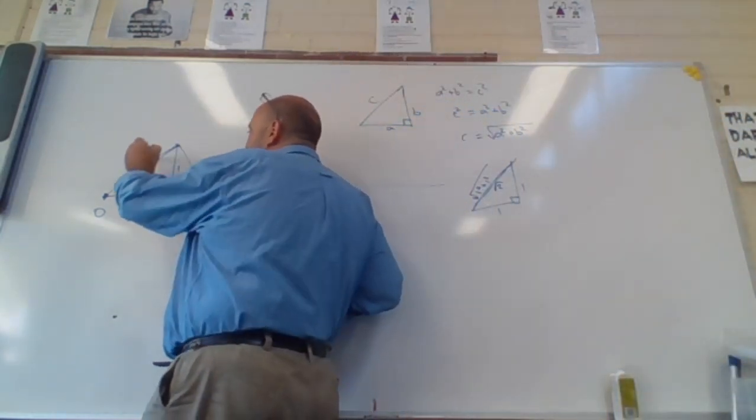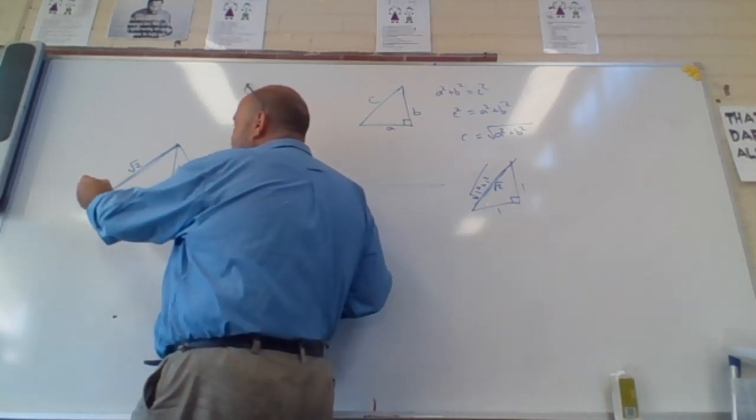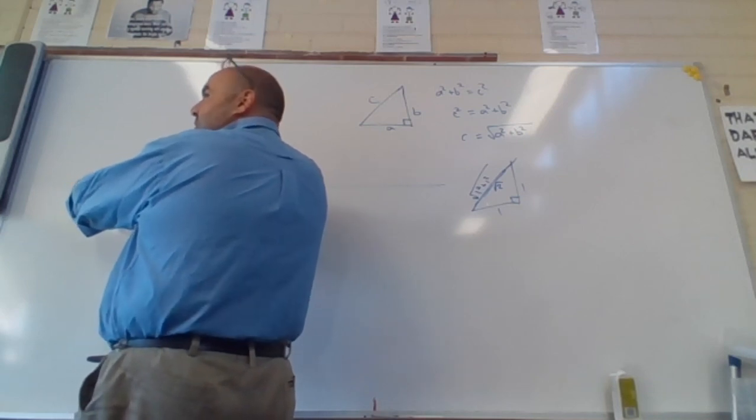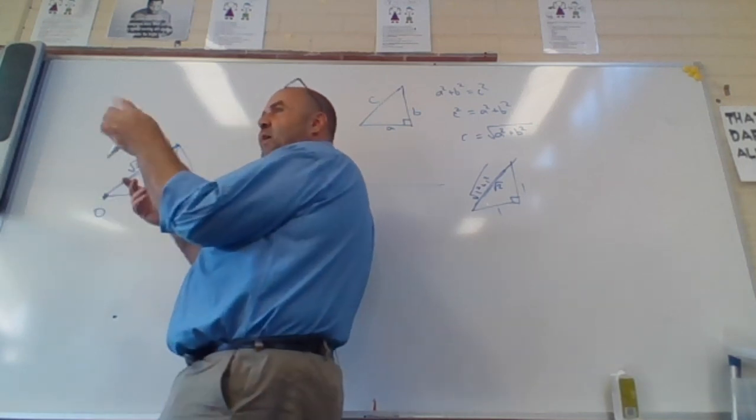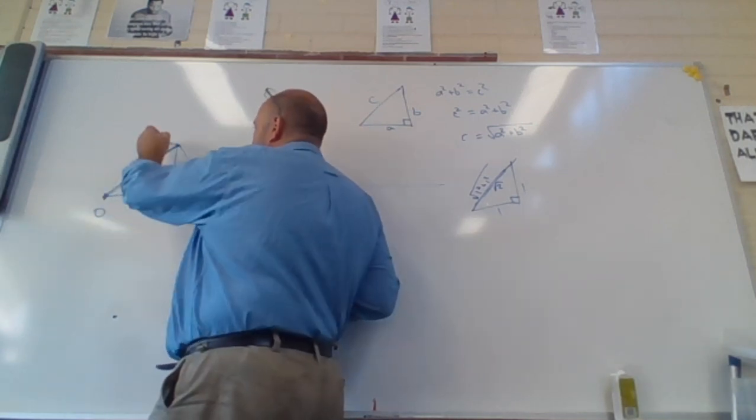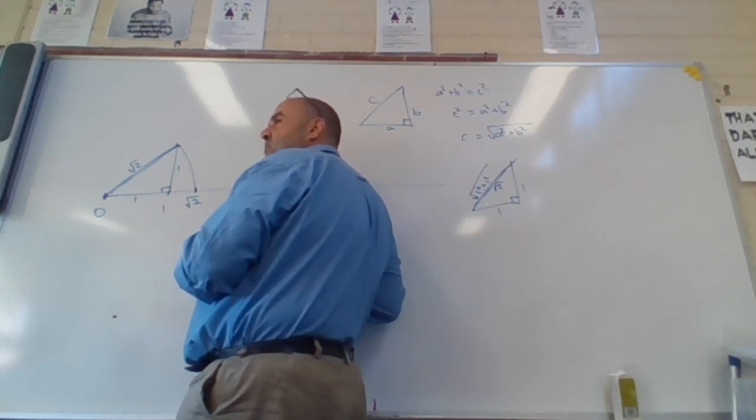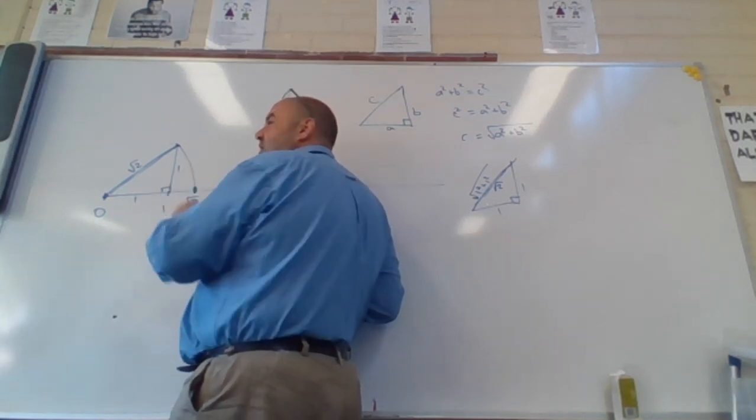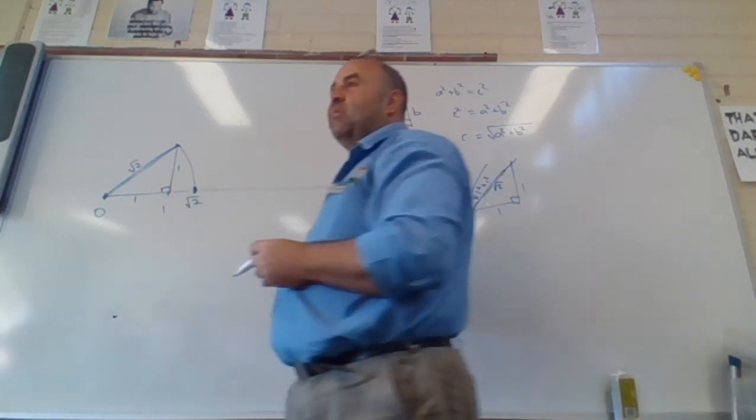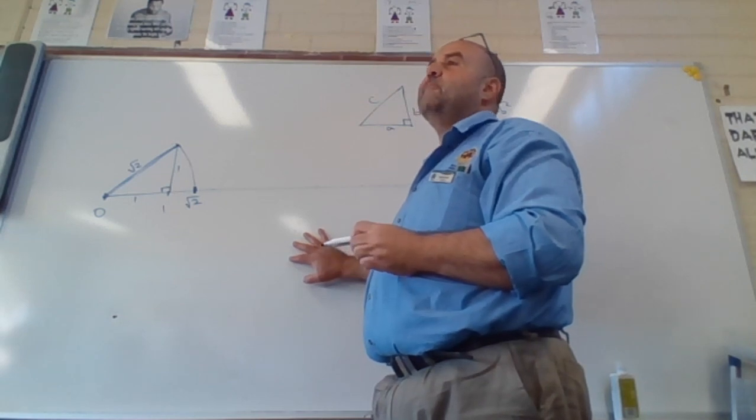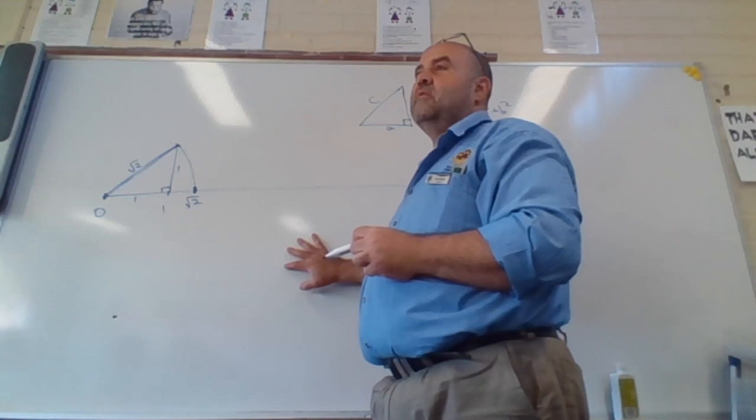So if that length there is root two and I put a compass point there and I open up the pencil part of the compass there and I draw an arc, well the radius doesn't change, right? If it's root two there, it's going to be root two down there. Well that's how I find this spot down here. Now I know where root two is on my number line.